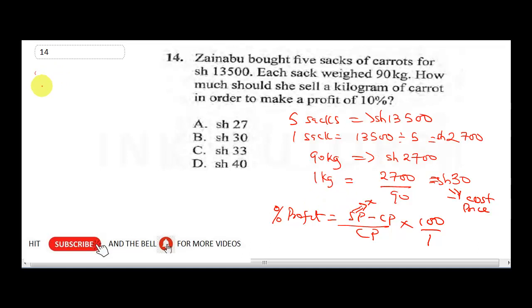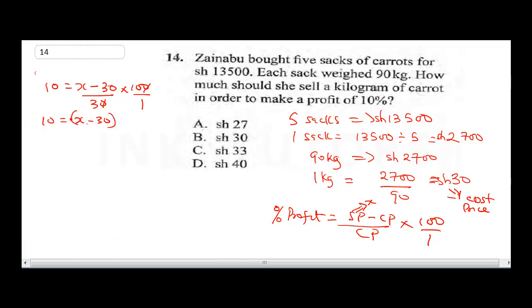We already know our cost price to be 30 shillings. We know our percentage profit to be 10%. So if we substitute that, we can now look for our selling price. Let's call our selling price X. So percentage profit, which is 10, is equal to X minus our cost price, 30, over 30 times 100. So we'll cancel the zero, you have 10 equals X minus 30, bracket 10, all over 3. We're going to cross multiply, 30 will equal X minus 30 all into 10.